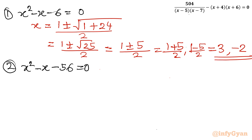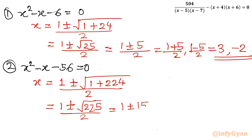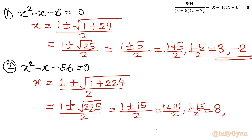So two solutions from the first equation are x = 3 and x = −2. Now for the second quadratic equation, applying the quadratic formula again: (1 plus or minus square root of 1 + 224) over 2, which is (1 plus or minus square root 225) over 2. Since square root of 225 is 15, we get x = (1+15)/2 = 8 and x = (1−15)/2 = −7.